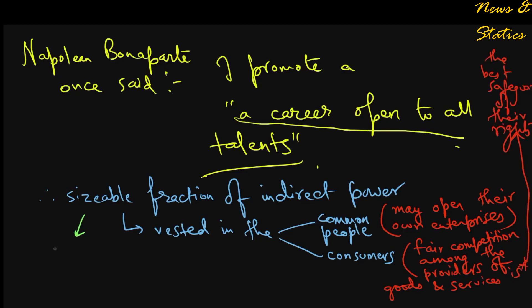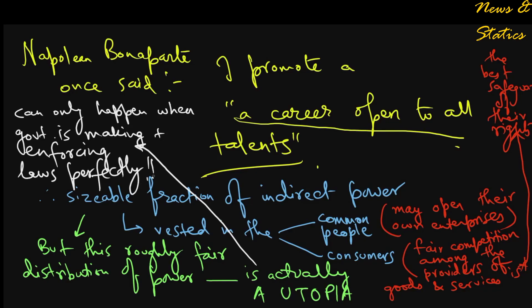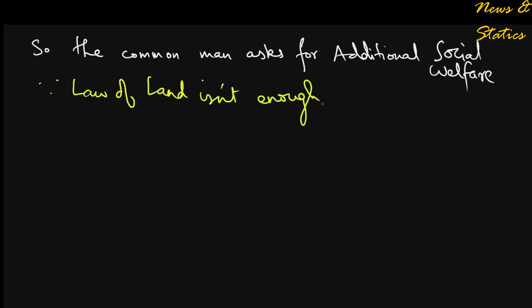But this roughly fair distribution of power in a society is in fact a utopia, which can only happen when government is perfectly exercising its duty of making and enforcing laws. In practice this is not the case, which is why the common man asks for additional social welfare because he knows that the law of the land is not enough to ensure his well-being.